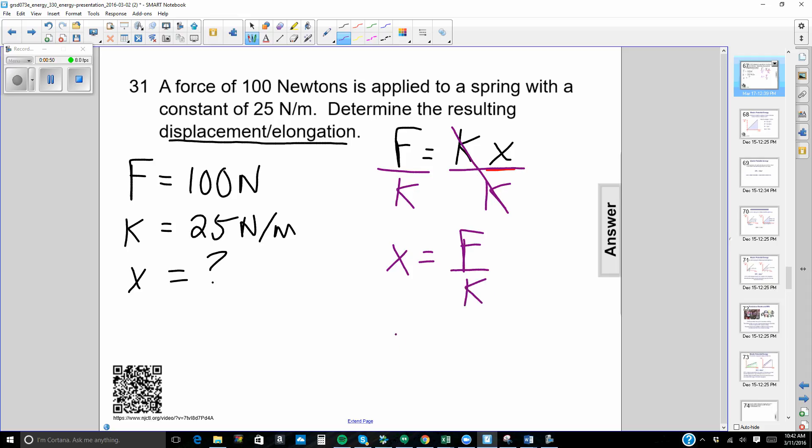Let's substitute in our values for force and k, including our units, just to make sure that our formula makes sense. That's 100 newtons divided by 25 newtons per meter. The newtons cancel out, and we should get a displacement of 4 meters.